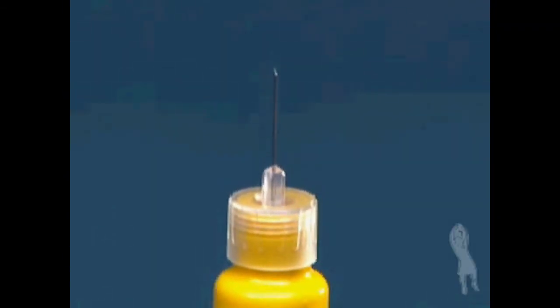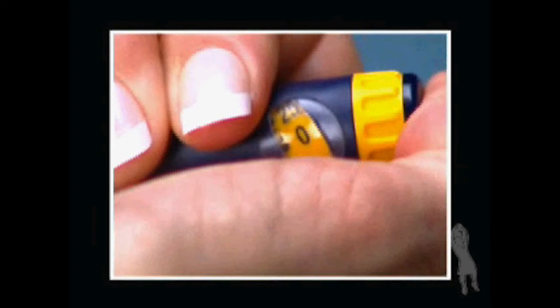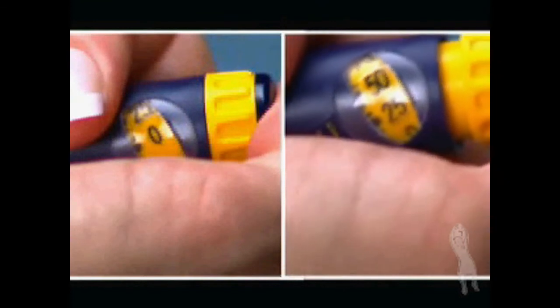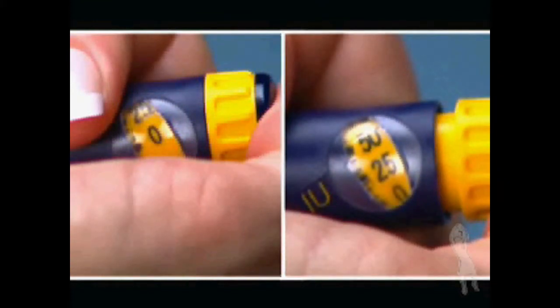Use the BD Microfine pen needle for one injection only. Look at the dosage window. The middle of the dosage window should display a dot next to the zero. If the injection button does not push all the way in and the number in the dosage window does not read zero, it means there was not enough medication in the cartridge to complete your dialed dose.